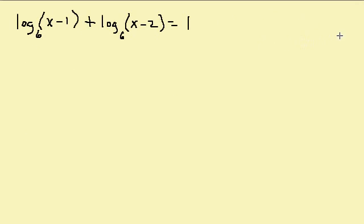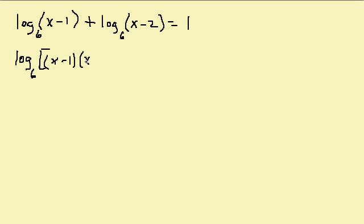Let's look at another problem. We want a single log equals a number or a single log equals a single log. On the right hand side I have a number, but on the left hand side I have two logs. I can write the left hand side as a single log — when separated with addition it becomes multiplication. That gives me log base 6 of (x minus 1) times (x minus 2) equals 1.